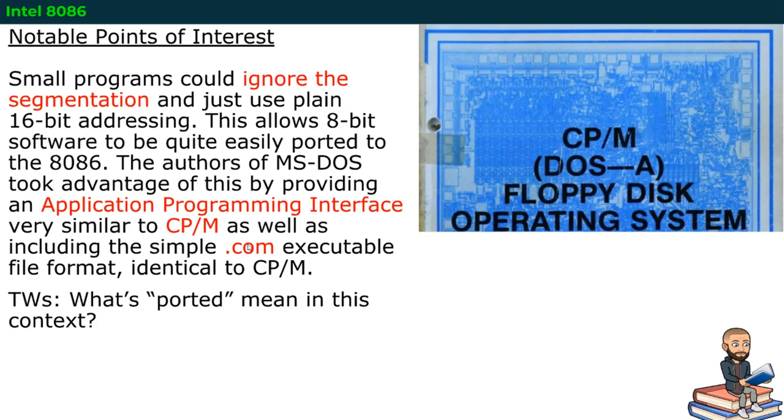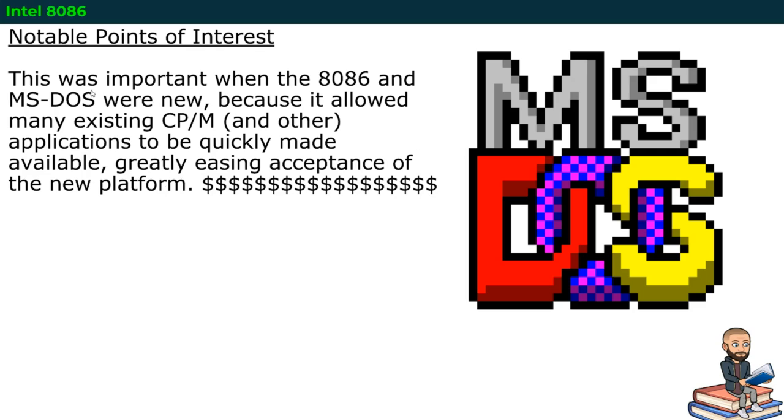Not surprisingly, this was important when the 8086 and MS-DOS were new, because it allowed many existing CPM and other applications to be quickly made available. So, Intel was giving people no reason not to get their computer or their new processor.